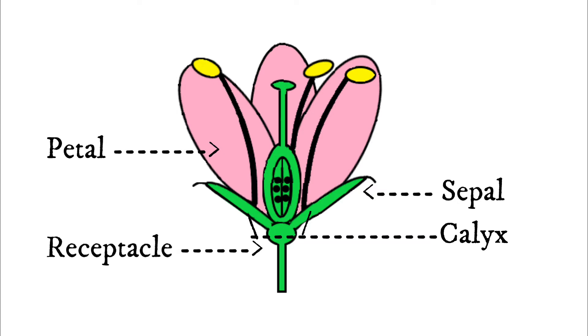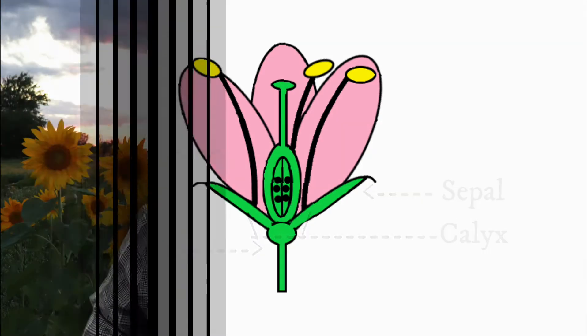Now, the petals are often the colorful, showy parts of a flower, and sometimes have a fragrance and/or nectar glands. Like we mentioned before, these colors and smells attract pollinators. And interestingly, certain colors and petal shapes attract very specific types of pollinators.